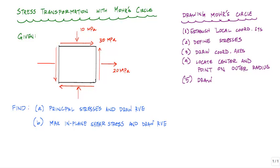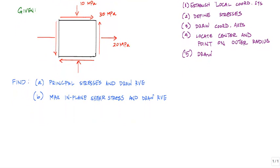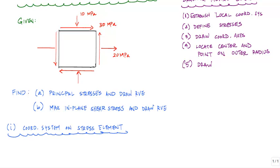The way we're going to do this is by using Mohr's circle. Here I've summarized the process that I like to use for drawing Mohr's circle. The first thing I want to do is establish a local coordinate system on the stress element. Technically, you can use any direction as x and y, but to get started I'm just going to use x as horizontal and y as vertical.